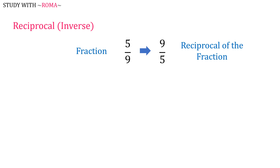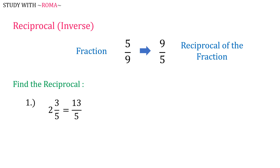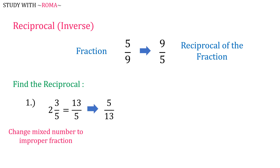Let's have another example. Number 1: 2 and 3 over 5. This is a mixed number, so change it first to an improper fraction. 2 and 3 over 5 is equal to 13 over 5. Therefore, the reciprocal of 2 and 3 over 5 is 5 over 13.